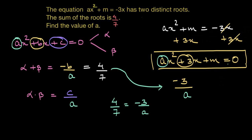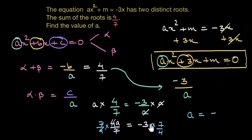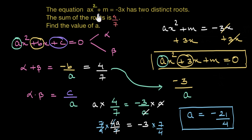On multiplying both sides with a, this and this cancel out, and 4a by 7 would be equal to negative 3. Now on multiplying both sides with the reciprocal of 4 by 7, that is 7 by 4, the 4 by 7 cancels out with 7 by 4, and we are left with a equals to negative 7 threes are 21 divided by 4. So the value of a that would satisfy the given equation — that is the coefficient of x squared — is equal to negative 21 divided by 4.